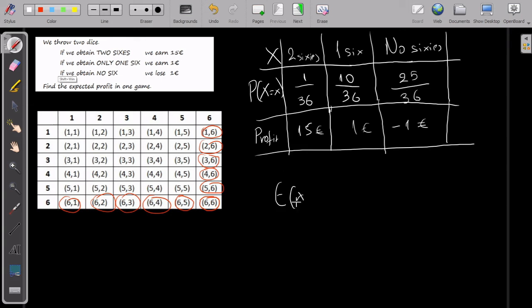So, the expected value will be one over thirty-six times fifteen plus ten over thirty-six times one plus twenty-five over thirty-six times minus one. If I make the calculations, you see it's fifteen plus ten, twenty-five minus twenty-five, zero.